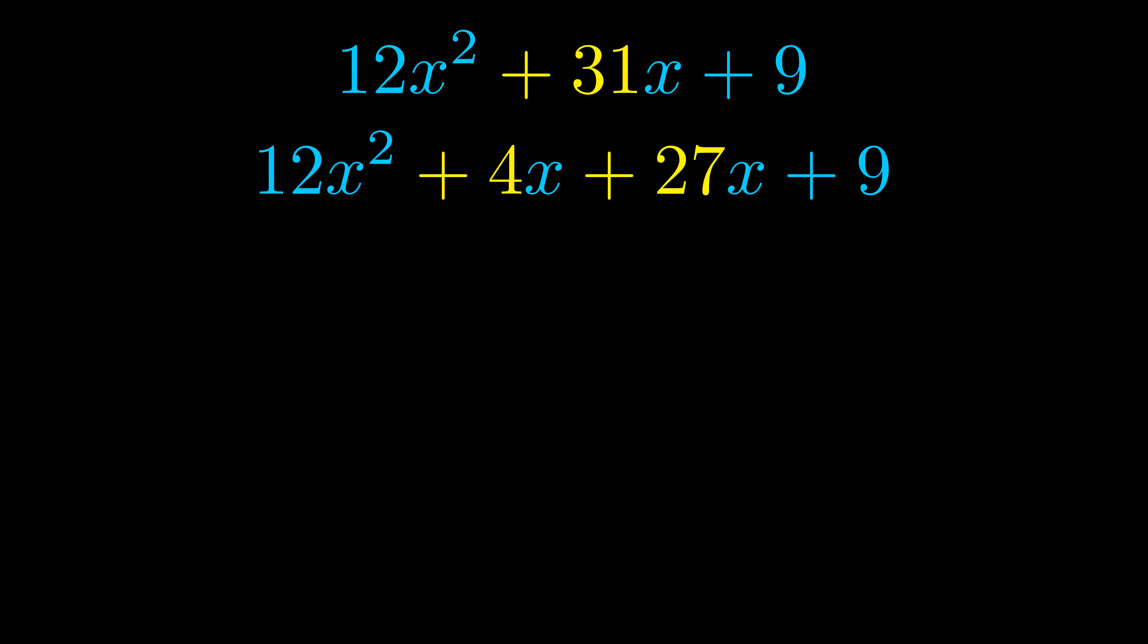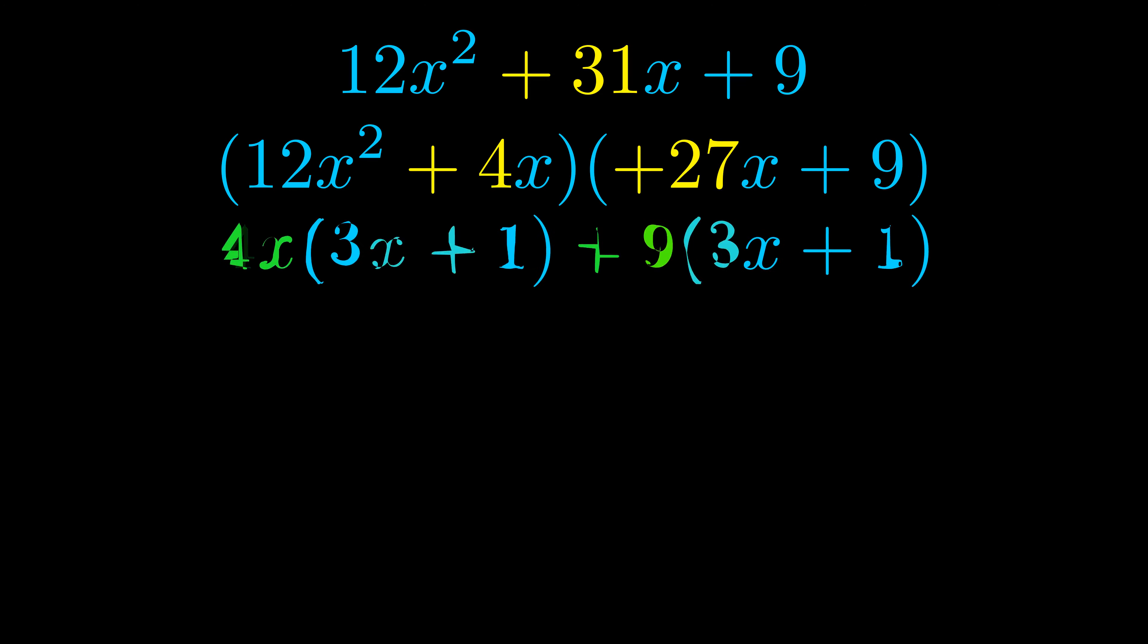Once we've done this, we put parentheses around the first term and the last term. We do that so we can take the greatest common factor out of both terms. We can see the greatest common factor is now outside in green.